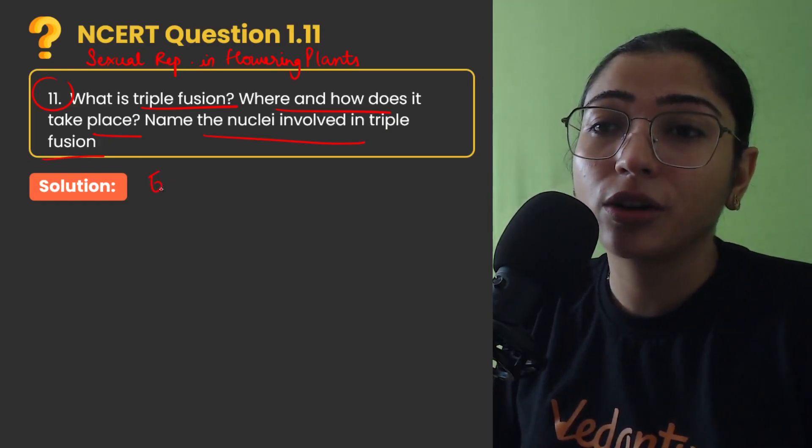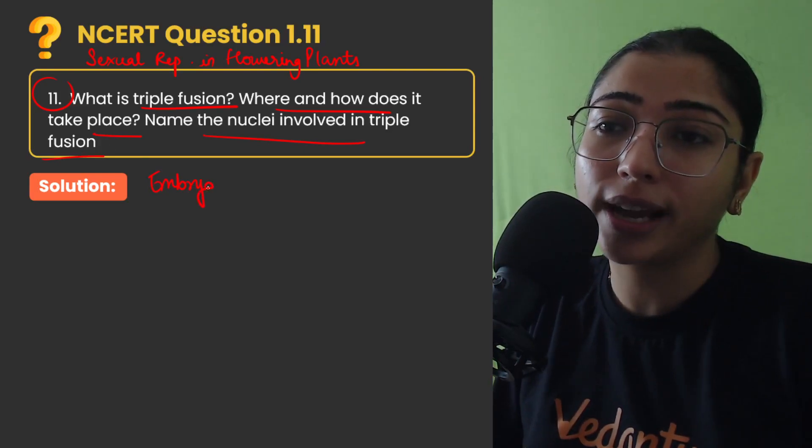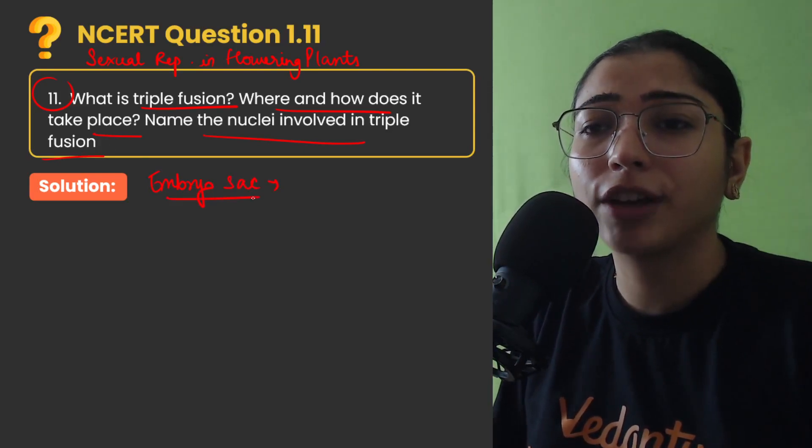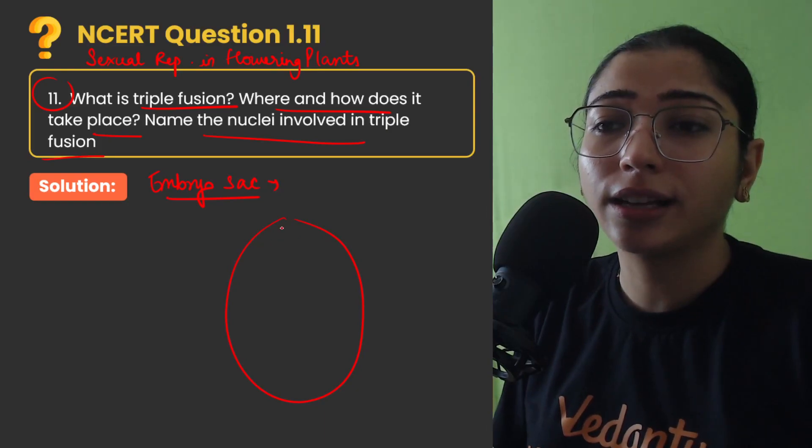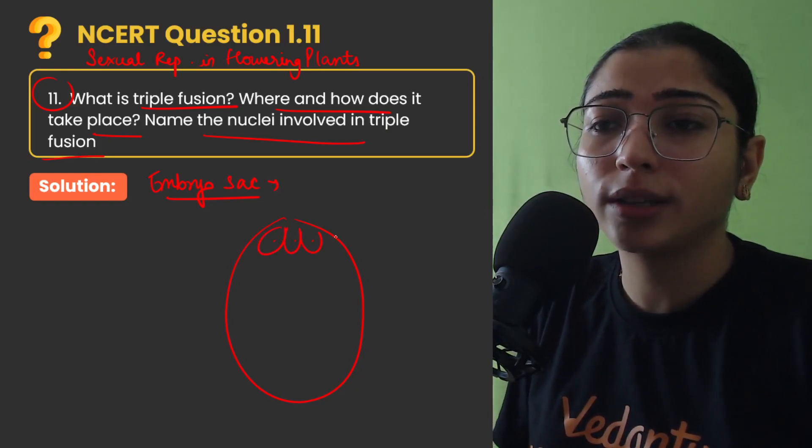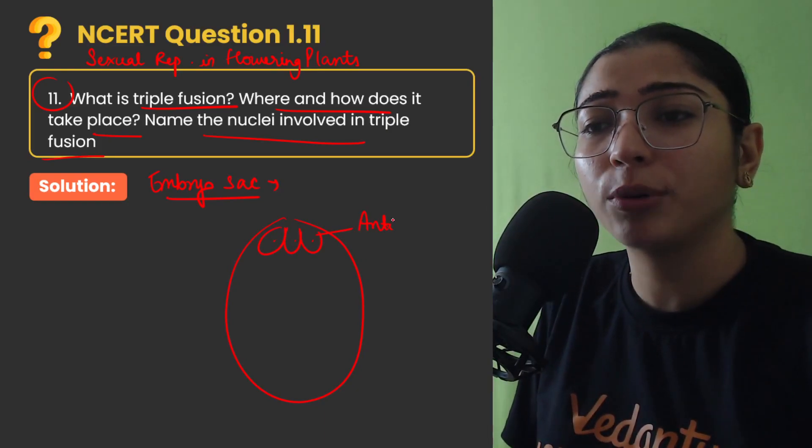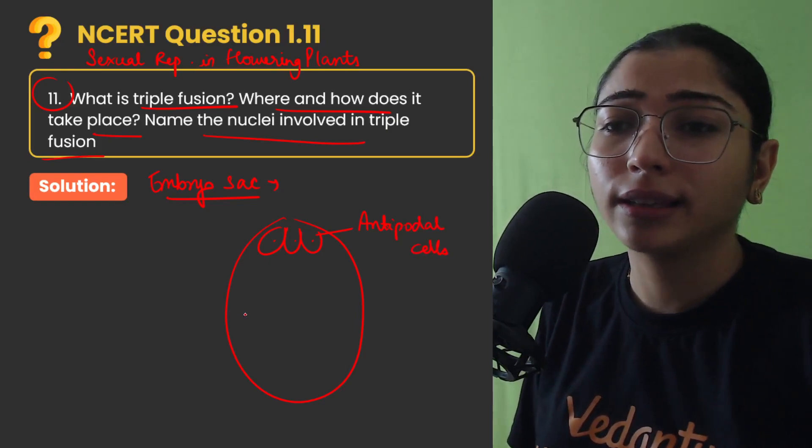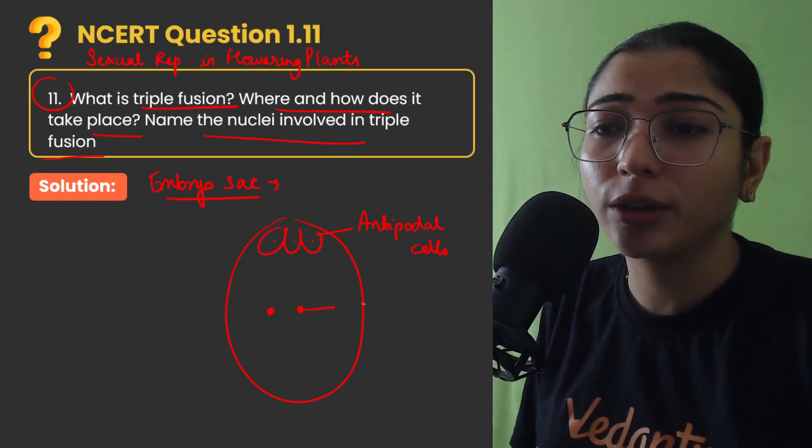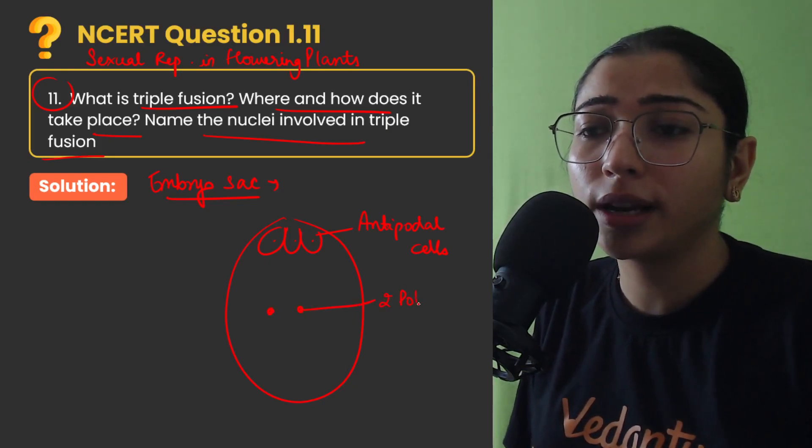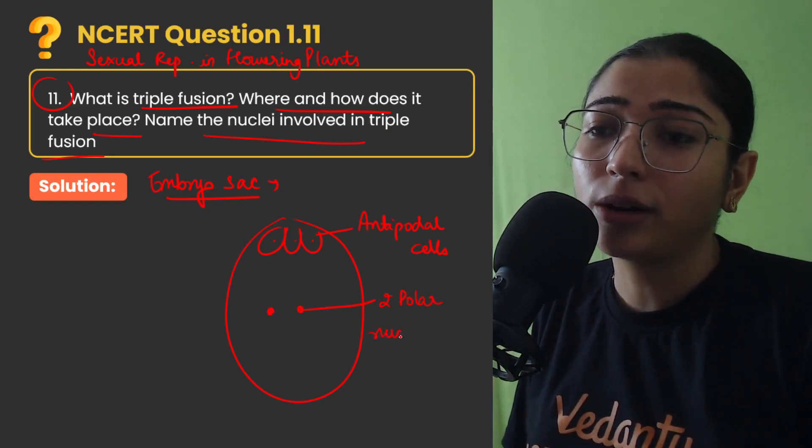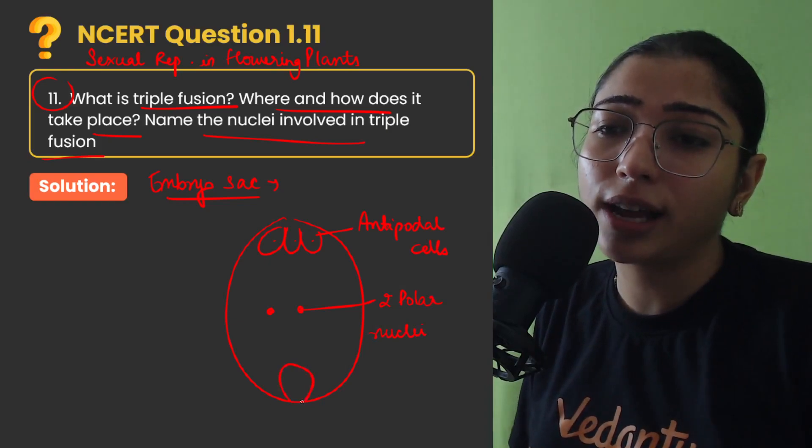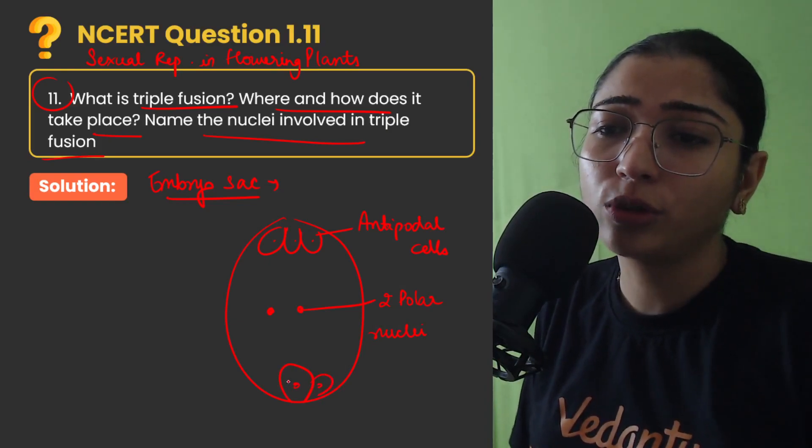First of all, let's start with that inside the embryo sac. We have studied the structure that there are 3 antipodal cells towards the chalazal end. In the center there are 2 polar nuclei in the large central cell, and on the micropylar end we have a large egg cell and 2 smaller synergids.